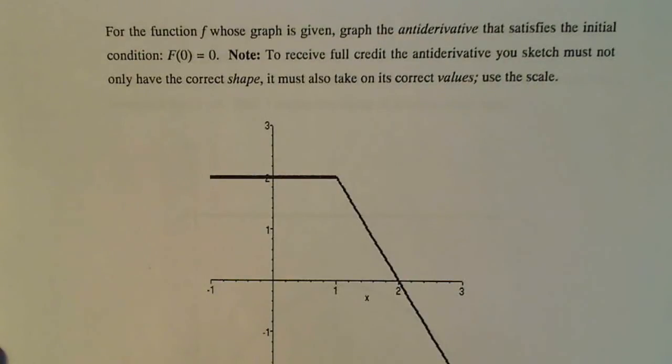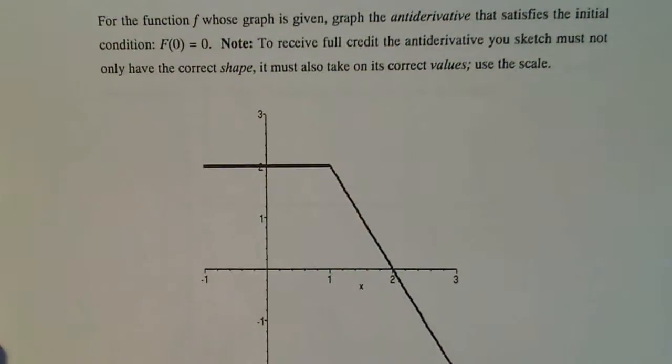For the function f whose graph is given, graph the antiderivative that satisfies the initial condition f of zero equals zero. Note, to receive full credit, the antiderivative you sketch must not only have the correct shape, it must also take on its correct value and we want to use the scale.